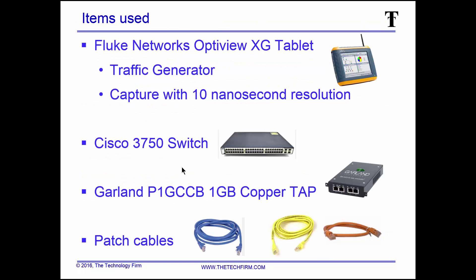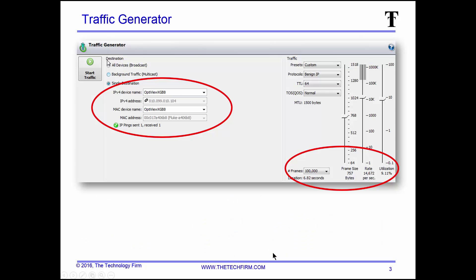Here's my recipe list of ingredients. I had a Fluke Networks OptiView XG tablet, a Cisco 3750 switch, a Garland copper tap, and a bunch of patch cables. On the generation screen you can see I'm not generating broadcast or multicast — I'm doing unicast. I'm throwing out a hundred thousand packets with a 557-byte frame size at 9.11 percent utilization.